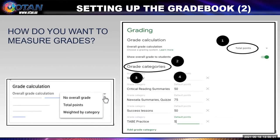Let's look a little bit closer. You'll see the three choices including no overall grade, total points, and weighted by category. Once you choose one, you open the grade categories. You can see the grade categories reflecting quizzes, essays, worksheets, and the point value you want to include. Maybe you want quizzes to be 40% and daily work to be 60% — that's the weighted one. That's very popular with some teachers because they want students who struggle with quizzes to still get credit for the daily work they do.